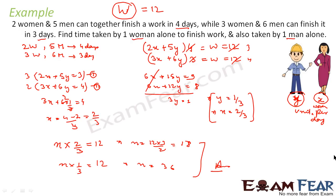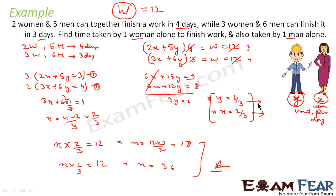To recap: we assumed unit work per day done by women is x and by men is y. Two women contribute 2x per day, five men contribute 5y per day, and total work in 4 days equals W. Similarly, 3x + 6y multiplied by 3 equals W. Taking W = 12 (divisible by both 4 and 3), we got x = 2/3 and y = 1/3, with total work assumed as 12 units.